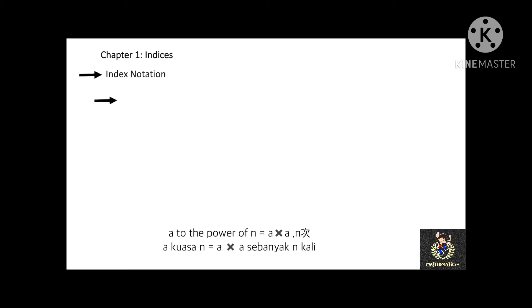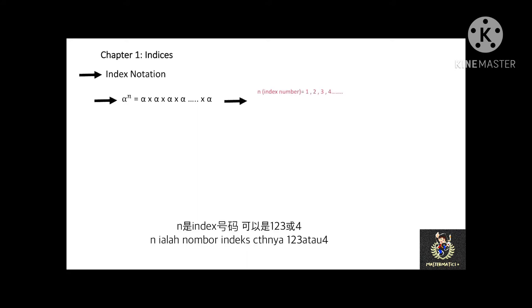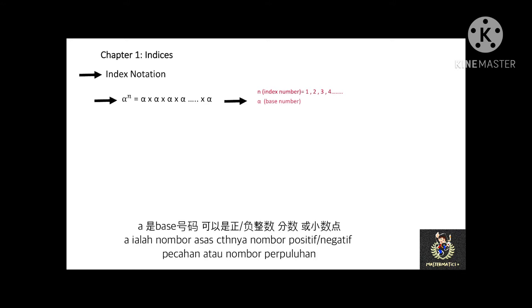For example, alpha to the power of n equals alpha times alpha times alpha, for n times. Where n is the index number — it can be 1, 2, 3, or 4. And alpha is the base number.